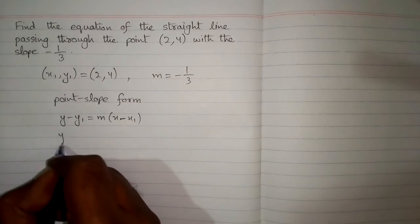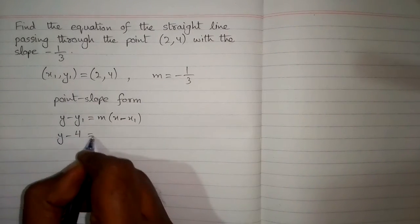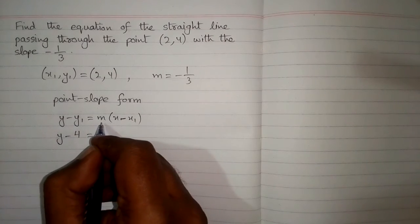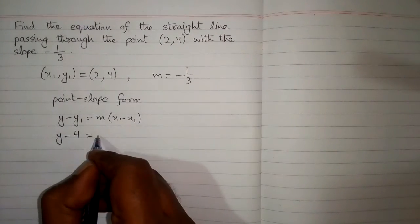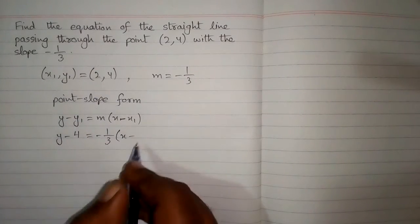Now you put the value of y1 which is 4 in place of y1 in this equation. Then we put the value of m which is minus 1 upon 3. Then we put the value of x1 which is 2.